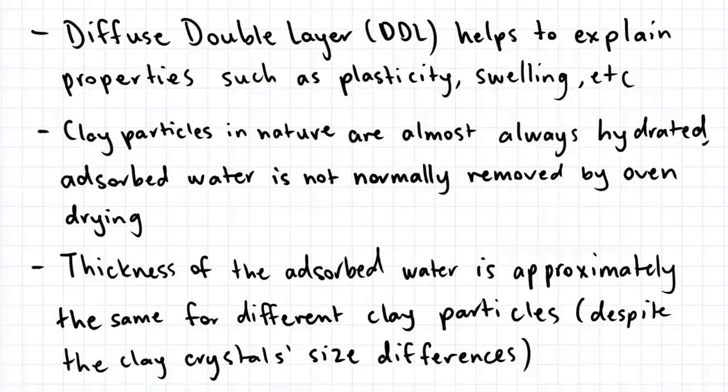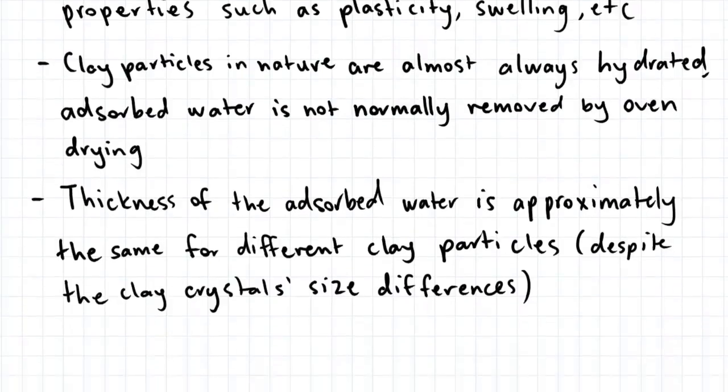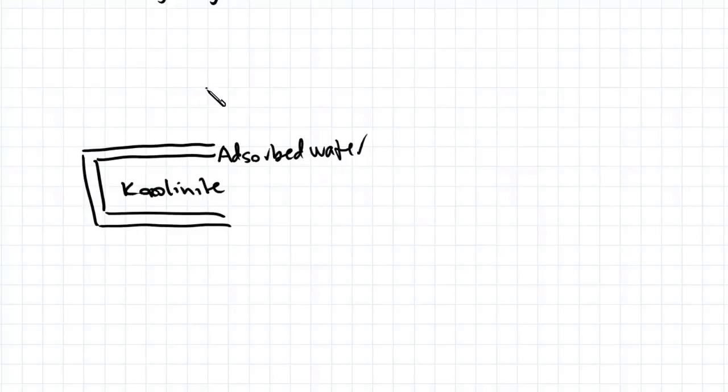I'll just quickly draw the diffuse double layer for kaolinite and montmorillonite. So let's say we have our kaolinite crystal here, with a thin film of adsorbed water. And this would be what the double layer of water would look like.